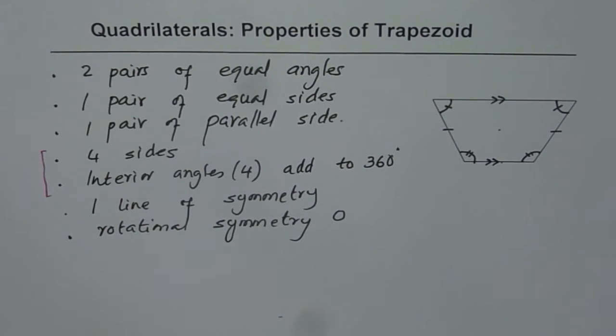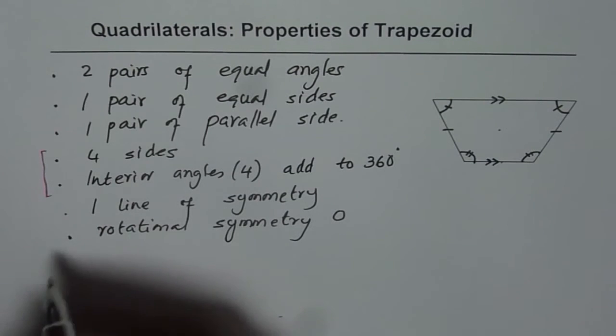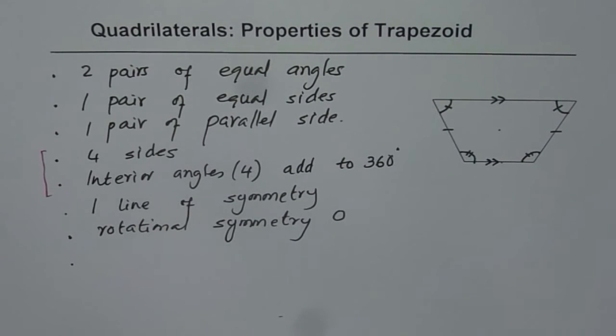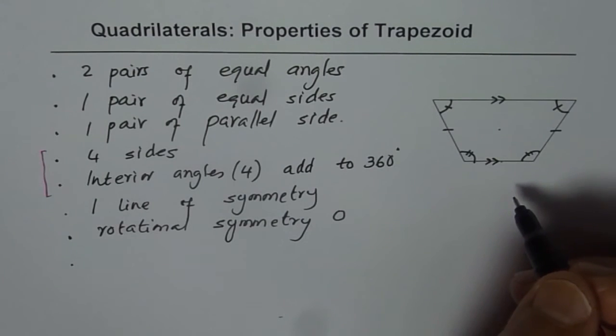Which you can draw. So look at it carefully and draw the line of symmetry. Now let me give you the area of this shape, which is trapezoid.